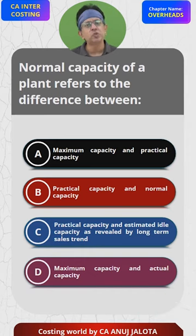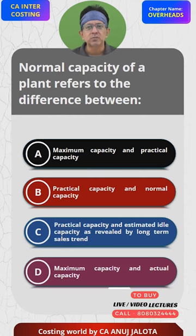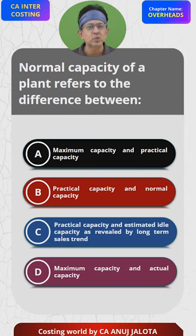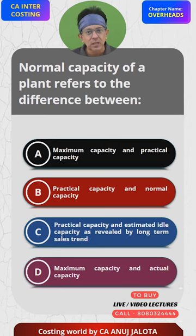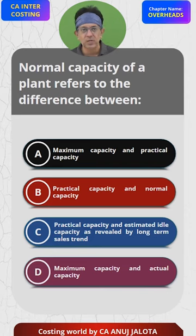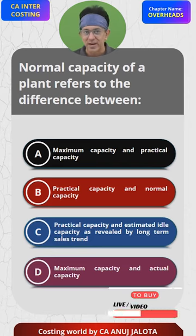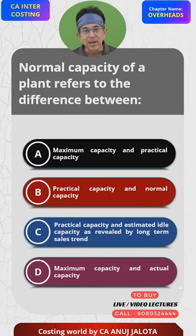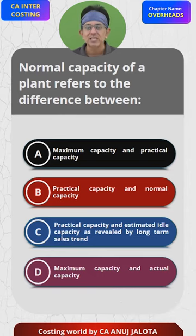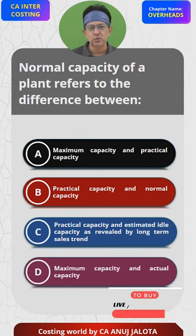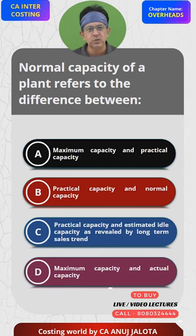But I wish to only produce 80,000. Why? Because there is no demand. So that means 20,000 units of capacity will be remaining idle. Based upon that logic, the answer should be C — it is the difference between practical capacity (in my example, 1 lakh) less estimated idle capacity of 20,000 units, as revealed by the long-term sales trend.